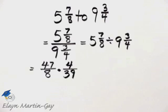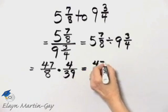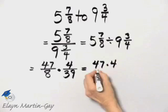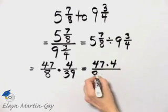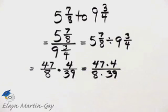If you need to take an extra step, please do so. How do we multiply fractions? It's numerator times numerator over denominator times denominator. And then we see if we have any common factors.